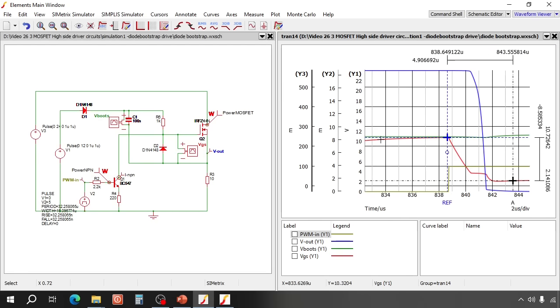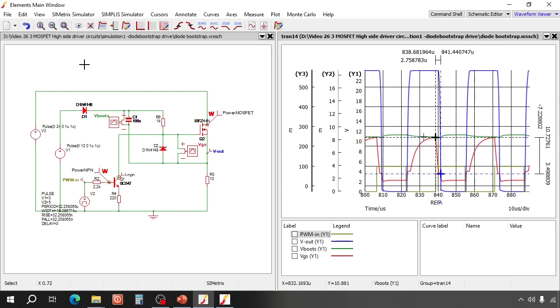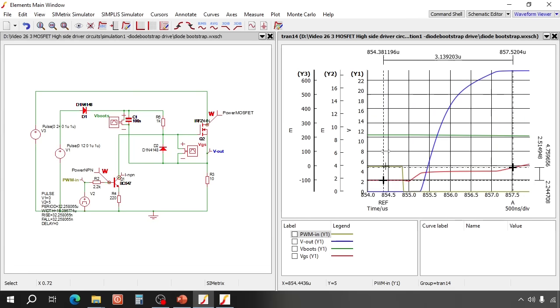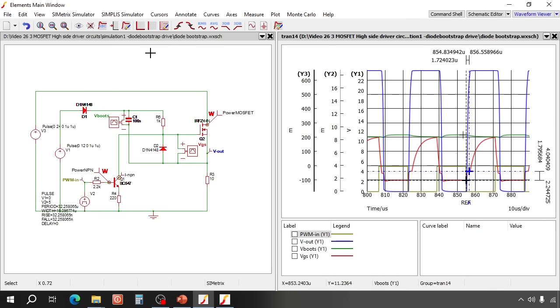Here the logic signal goes high. It takes about 2.7 microseconds for the output voltage to go low. Now let's check the switch on. From the logic signal going low to the output becoming high takes about 1.7 microseconds. So that is pretty slow. Now let's check the losses in the MOSFET.